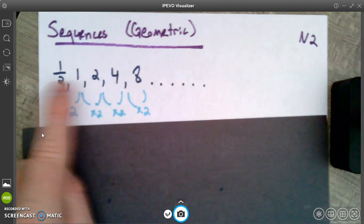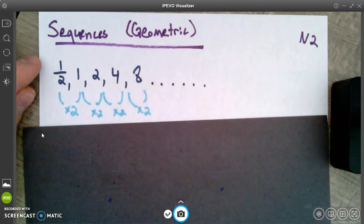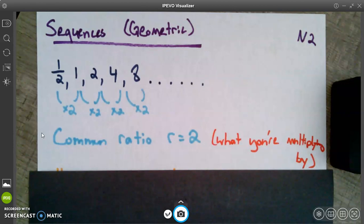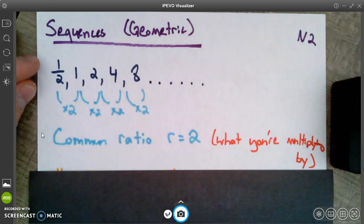A geometric sequence is just one where you're multiplying over and over and over. Here's a sequence. I'm obviously not adding each time because how much I'm adding is changing. It's not a common difference, we called it. But this time we call it a common ratio. The ratio between successive terms, one divided by a half, two divided by one, four divided by two. If you divide successive terms like that, you'll get what's called the common ratio, what you're multiplying by each time. And we'll call that R.